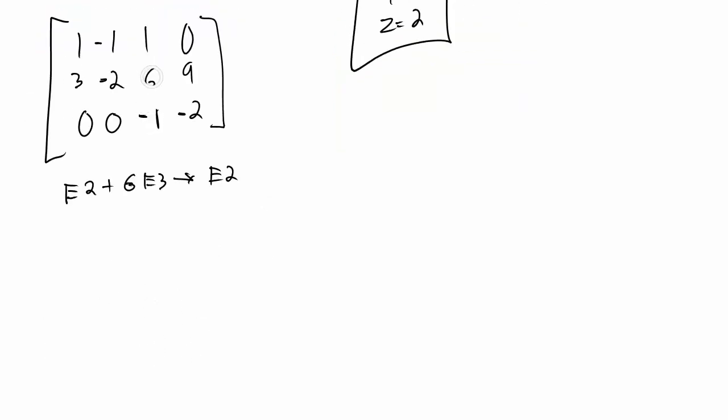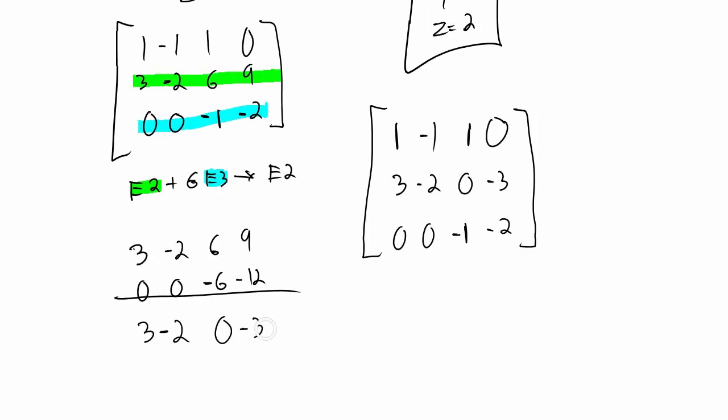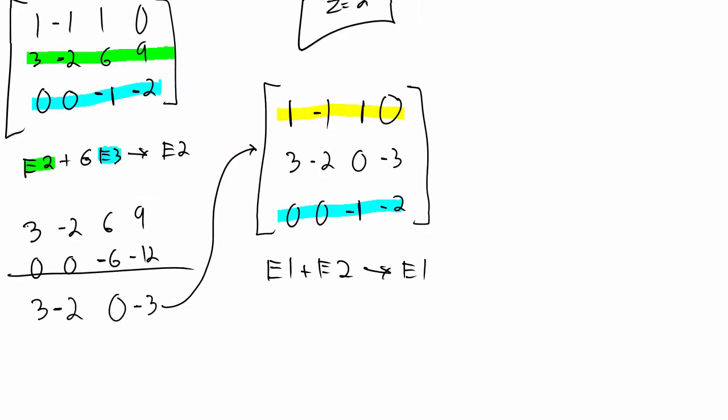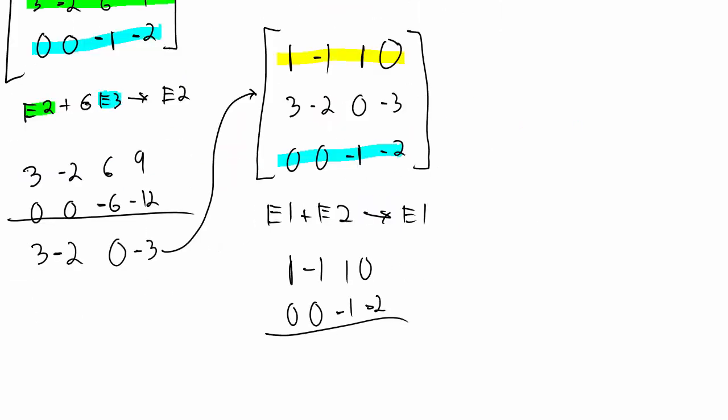But now to get the y by itself, I rewrite that original system, but I replace this equation here, 0, 0, negative 1, negative 2, with the third equation. And I could just put a positive 1 and a positive 2 there, which I'll do later. But if I combine the second and the third equation, which I highlighted here in green and blue respectively, that one will eliminate the z out of the second equation. And I can just replace that with the second equation.